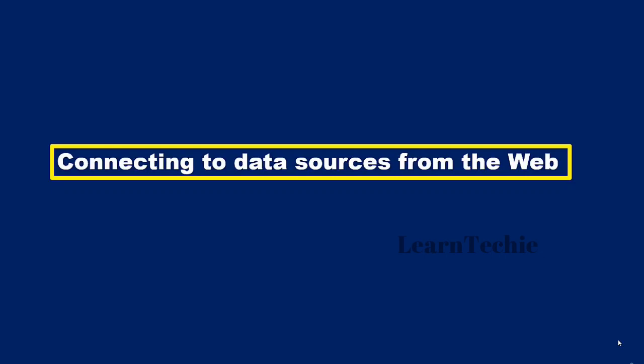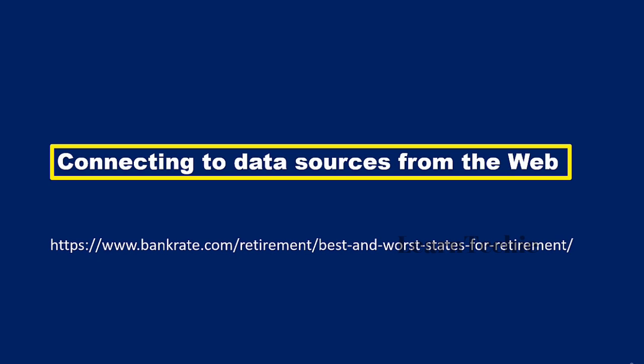Hello and welcome to this video. I'll be showing you how to connect to a data source from the web. Imagine you are trying to retire and looking for places to live, and you have some criteria to check — for example, a place with a lot of sunshine, low crime rates, or good health care. There's a website called Best Places to Retire that ranks each state. We're going to connect and interact with that data.